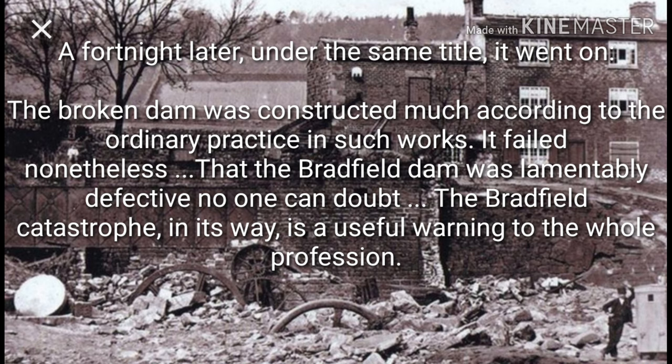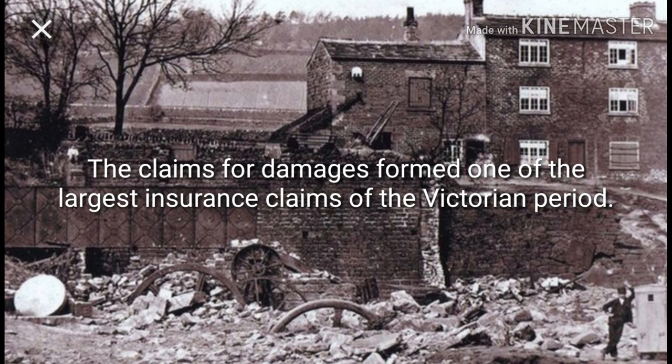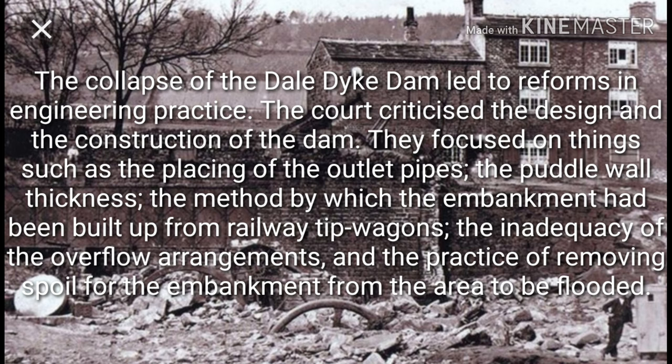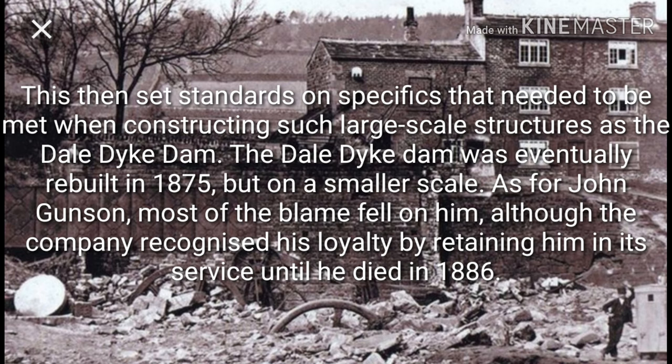The claims for damages formed one of the largest insurance claims in the Victorian period. The collapse of the Dale Dyke Dam led to reforms in engineering practice. The court criticised the design and construction of the dam, focusing on things such as the placing of outlet pipes, the puddle wall thickness, the method by which the embankment had been built up from railway tip wagons, the inadequacy of the overflow arrangements, and the practice of removing spoil from the embankment from the area to be flooded. This then set standards on specifics that needed to be met when constructing such large-scale structures as the Dale Dyke Dam.